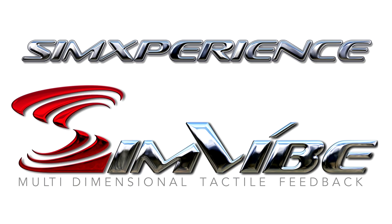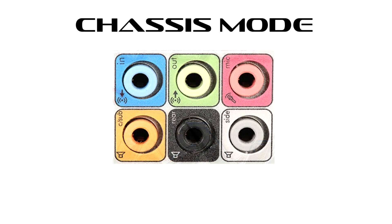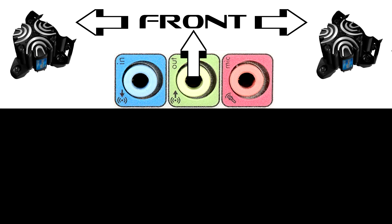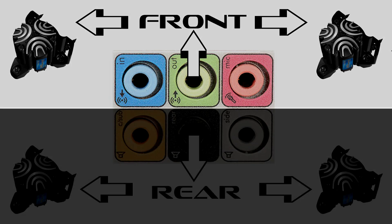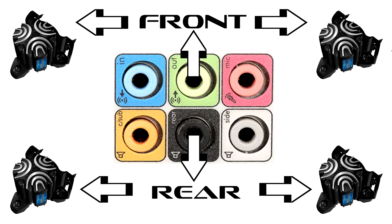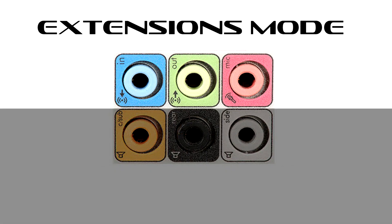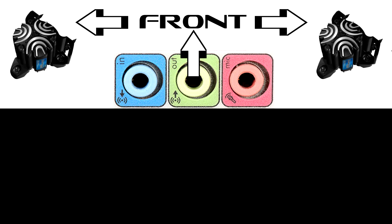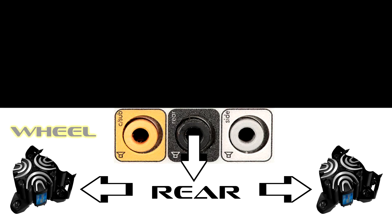Now that you have your sound card installed or are ready to use your onboard sound card, it's time to connect your amplifier. In an effort to facilitate the ability to share sim setups or profiles with other Simvibe users, Simvibe specifies a fixed sound channel to Simvibe channel mapping. For chassis mode, the green or front speaker channel is for front left and right, and the black or rear speaker channel is for rear left and right. For extensions or localized feedback, the green or front left speaker channel is for the seat and the front right channel is for shifter. The black or rear left speaker channel is for wheel and the right rear channel is for pedals.